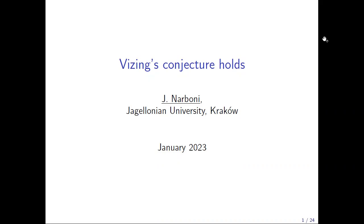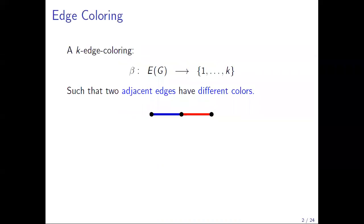Thank you, Bartek, for the introduction, and thank you everyone for attending this talk. Today I'm going to talk about Vizing's conjecture, which is a conjecture about edge coloring and edge coloring reconfiguration. This is a question I've been working on during most of my PhD. In this talk, I will be talking about proper edge coloring — a coloring of the edges of a graph such that no two adjacent edges get the same color.